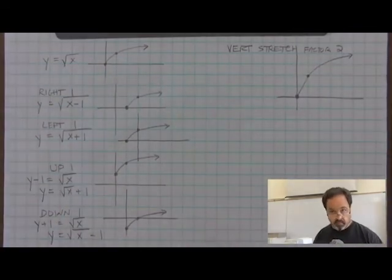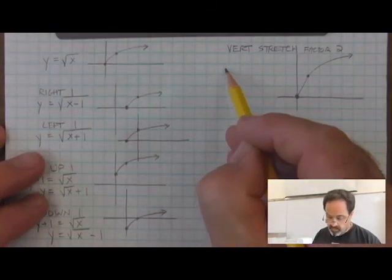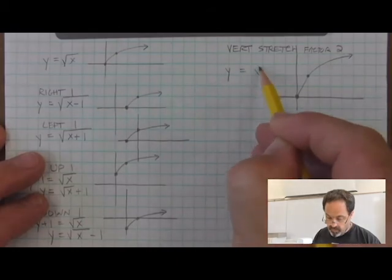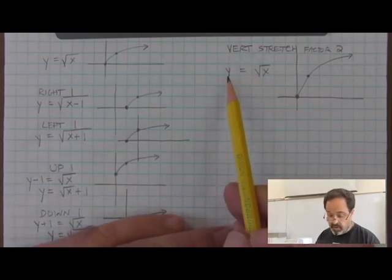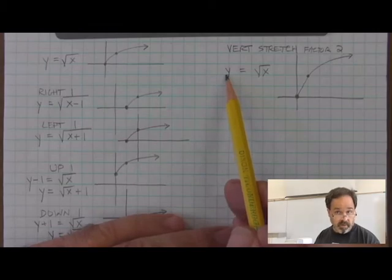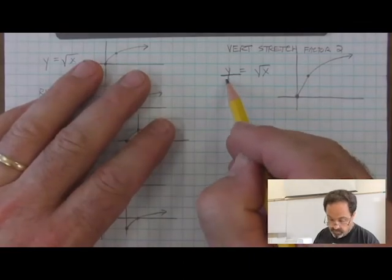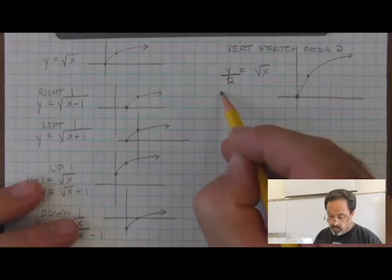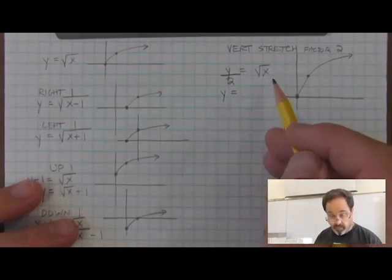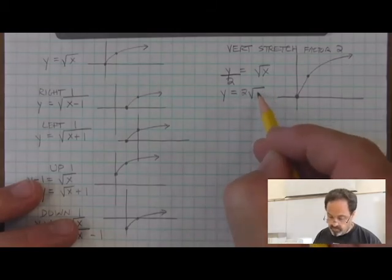So the curve is going to look much sharper. Mathematically, we have the parent function y equals radical x. This is a vertical change, so I affect the vertical variable y. Counterintuitively, to double distances I divide y by two. We're used to solving for y, so multiplying both sides by two gives us y equals two radical x.